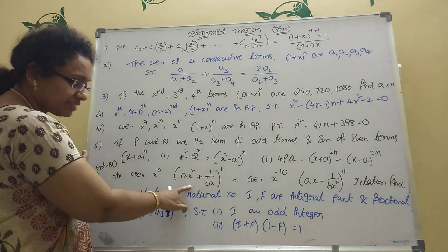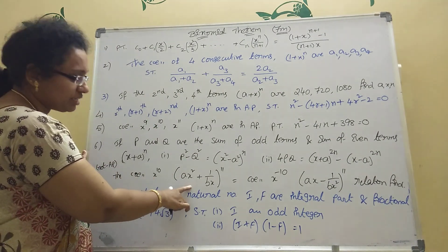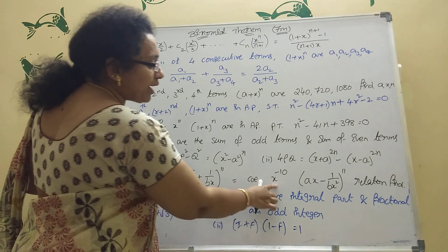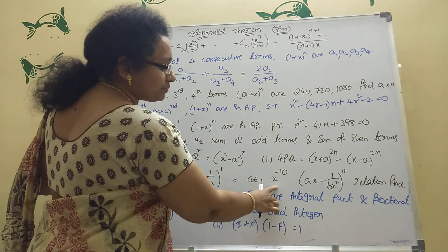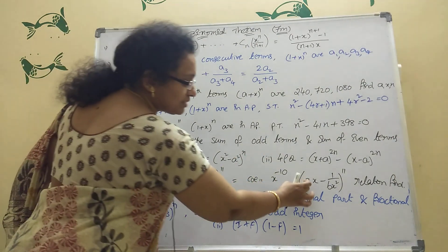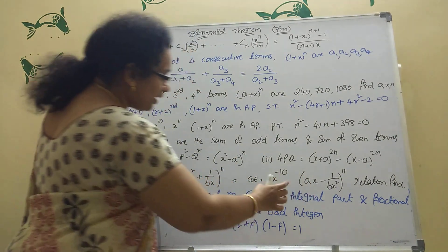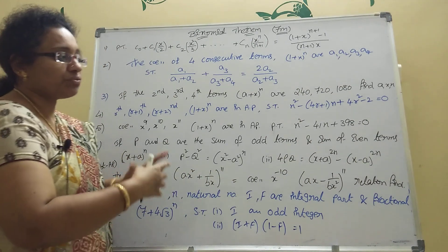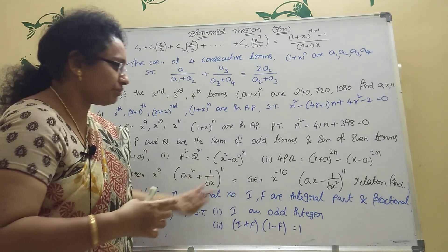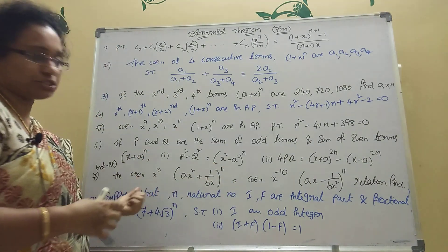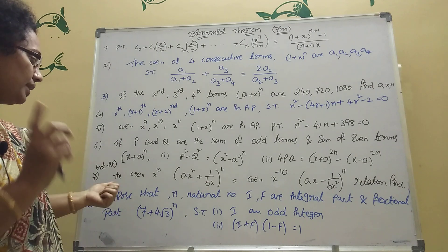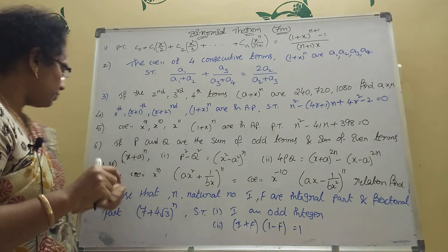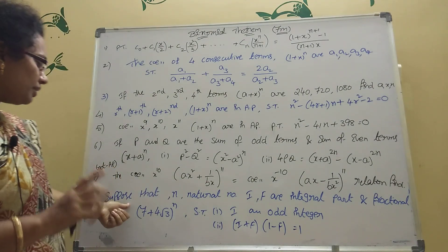The seventh problem is: the coefficient of x¹⁰ in a certain expansion equals the coefficient of x⁻¹⁰ in another expansion — equate them and find the relation between them. This was asked in the last two years in Andhra Pradesh.